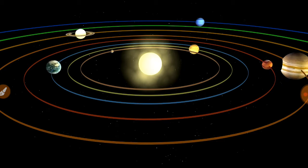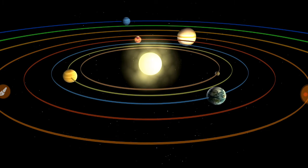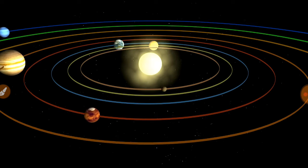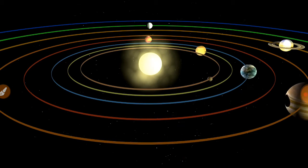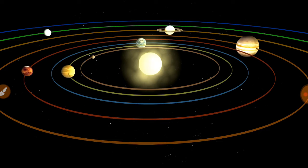According to the distance from the sun, the planets can be arranged as Mercury, Venus, Earth, Mars, Jupiter, Saturn, Uranus, and Neptune.